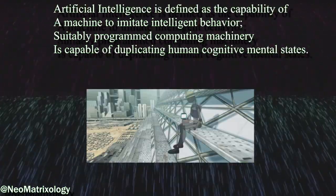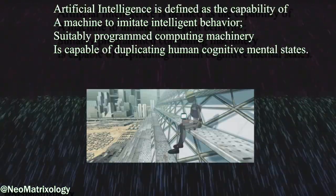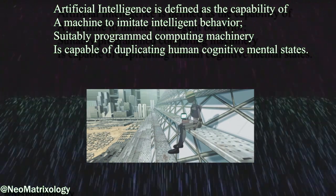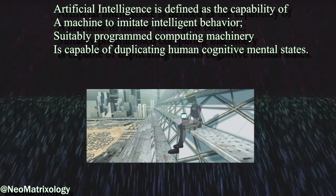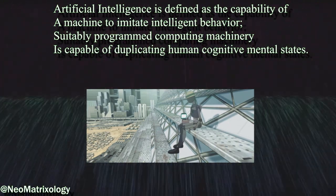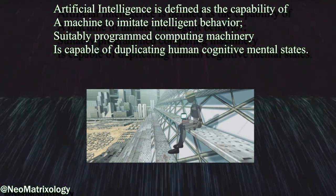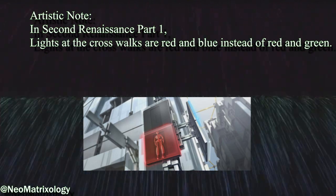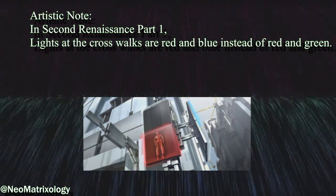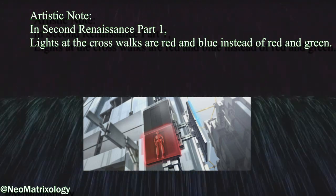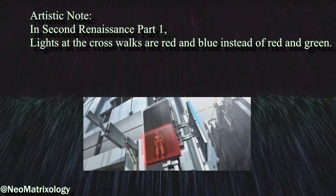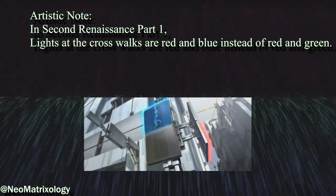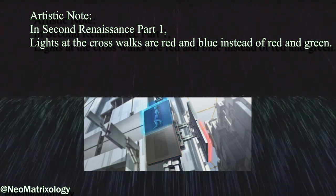Artificial intelligence is defined as the capability of a machine to imitate intelligent behavior. Suitably programmed computing machinery is capable of duplicating human cognitive mental states. Artistic note: in Second Renaissance Part One, lights at the crosswalks are red and blue instead of red and green, which is another example of the attention to detail put into the production of these films.